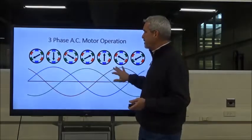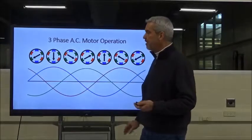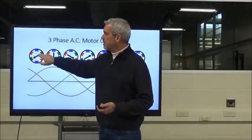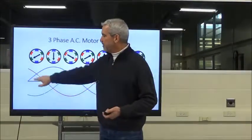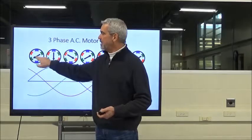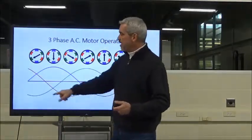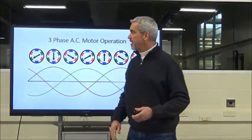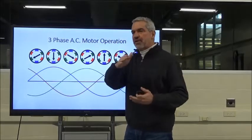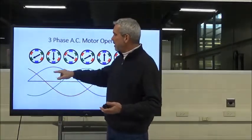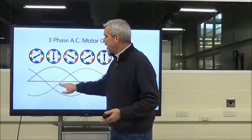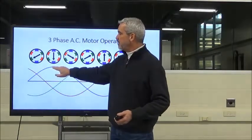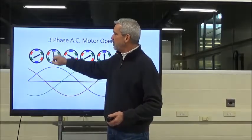Here we have three phases of voltage depicted as sine waves. The arrow indicates the rotor, which is aligned with the green coils. The green phase is peaking, so the rotor aligns with the strongest magnetic field. As that phase drops off, another phase picks up — the blue phase is peaking 90 degrees past the green peak. So 90 degrees later, the blue coils become the stronger magnetic field, and the rotor chases that strongest field, causing it to rotate.